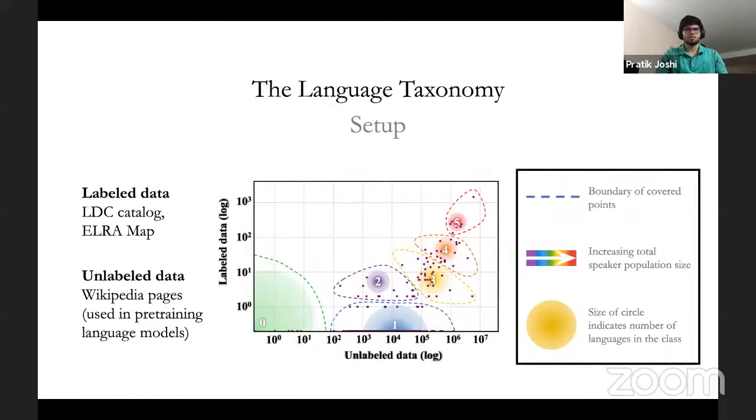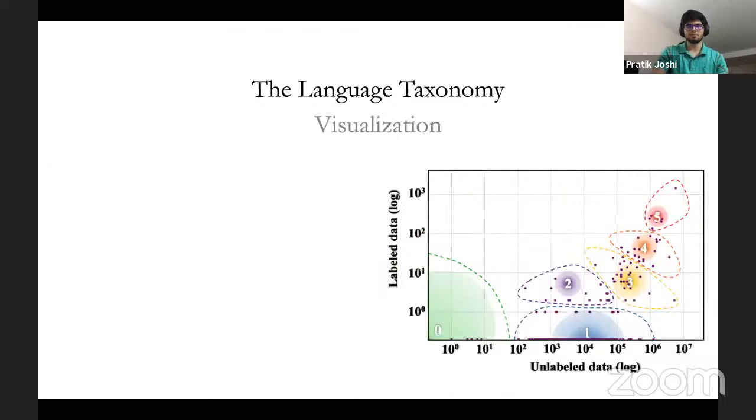To get an idea of the digital resource status for different languages, we constructed a taxonomy based on two simple features. We did so because we wanted to build them on basic features and see whether the same taxonomy would be reflected in different, more in-depth analyses. On the y-axis, we plot the available labeled data. For this, we take the amount of resources in the LDC catalog and the ELRA map. On the x-axis, we take the amount of unlabeled data. In this case, we use Wikipedia pages because a lot of pre-training language models use the wiki dump as unsupervised training data. We get six classes. The spectrum from violet to red corresponds to the total speaker population size. And the size of the circle itself corresponds to the number of languages in each class.